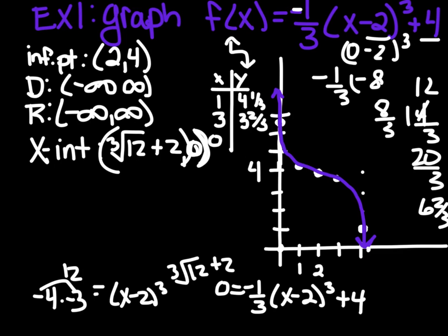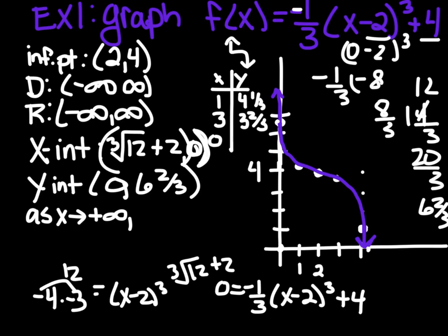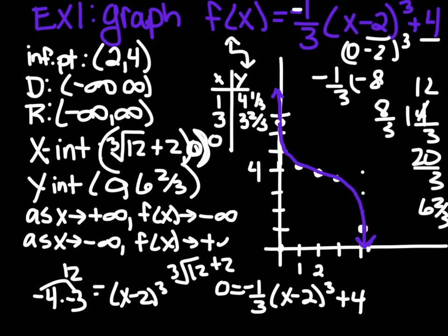The cubed root of 12 being approximately 4.3, so about where I had it crossing anyway. Our y-intercept, we already found that. That was at (0, 6 and 2/3). And our end behavior, as x approaches positive infinity, f(x) approaches negative infinity. And that's about all we can fit on this page.